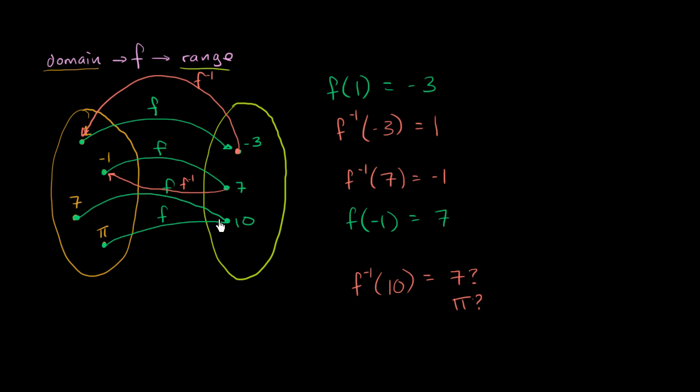And because the inverse mapping can't be done where you only map it with a unique thing, this function is not invertible. This is not invertible. The inverse mapping from the range to the domain, the inverse relationship, is not a function. It can't take an element in our range and map it to a unique element of the domain. For 10, we don't know. Does that map to pi or does that map to 7?